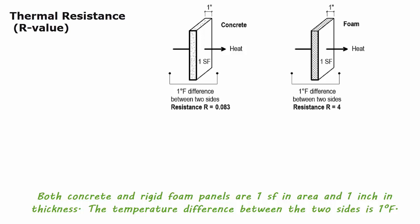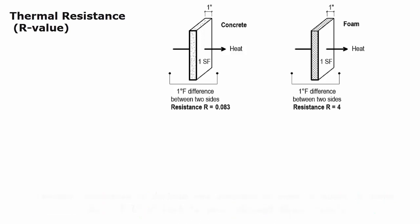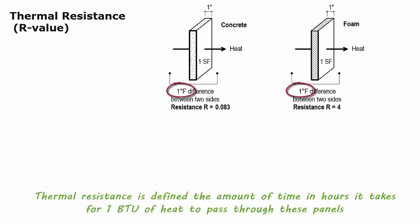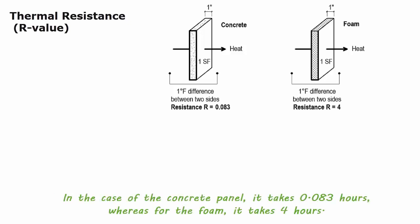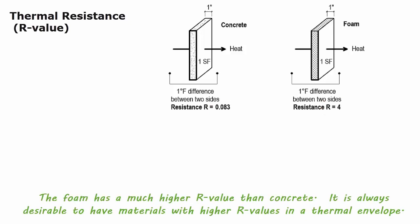In this example, both concrete and rigid foam panels are 1 square foot in area and 1 inch in thickness. The temperature difference between the two sides is 1 degree F. Thermal resistance is defined as the amount of time in hours it takes for 1 BTU of heat to pass through these panels. In the case of the concrete panel, it takes 0.083 hours, whereas for the foam, it takes 4 hours. Therefore, the foam has a much higher R-value than concrete.